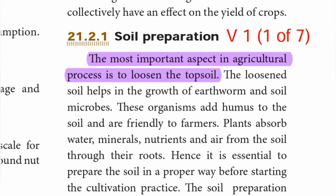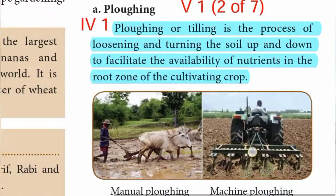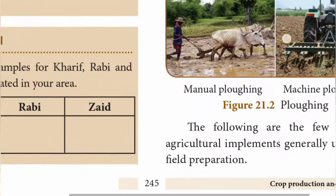The first point is given. The second point: ploughing or tilling is the process of loosening and turning the soil up and down to facilitate the availability of nutrients in the root zone of the cultivating crop. This is the second point in the detail first answer.